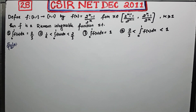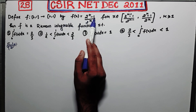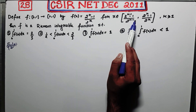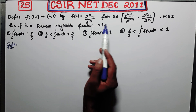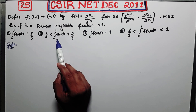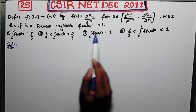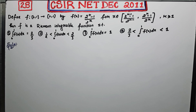Welcome back guys. I am here with you to solve problem number 28 of CSIR NET December 2011. This is a question from the topic of analysis. Define f such that f maps [0,1] to [0,1] by f(x) equal to (2^k - 1) / 2^k over this domain, where k is greater than or equal to 1. Then f is a Riemann integrable function. The options ask whether its integral over 0 to 1 is 2/3, lies between 1/2 and 2/3, equals 1, or satisfies another inequality.